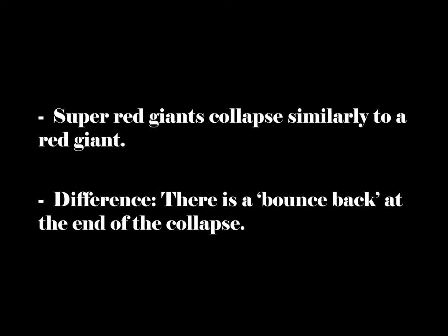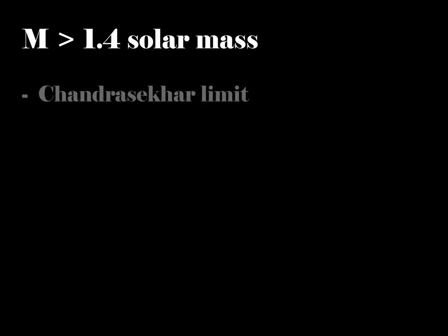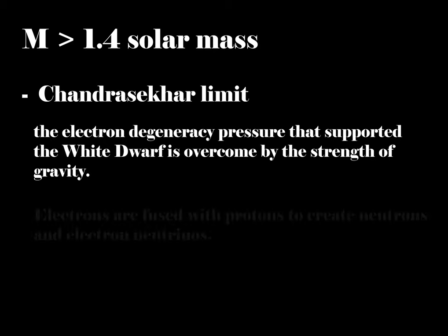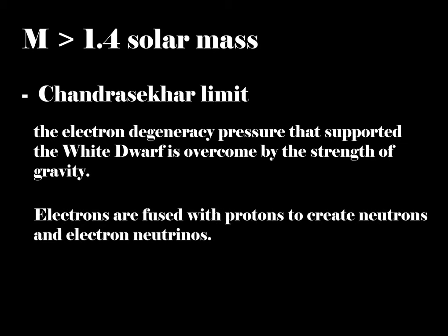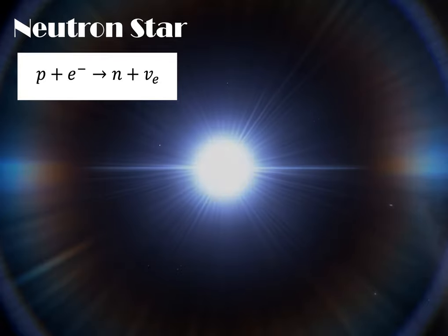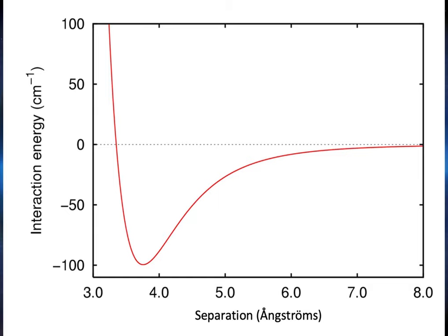Super red giants also collapse similarly to a red giant, the difference being that there is a bounce back at the end of the collapse, where some of the star is ejected in an explosion called a supernova. When the cores of these stars have a mass larger than around 1.4 times our solar mass, the Chandrasekhar limit is exceeded. This means the electron degeneracy pressure that supported the white dwarf is overcome by the strength of gravity. Electrons are fused with protons to create neutrons and electron neutrinos, creating a neutron star. The resulting neutrons are held in equilibrium due to neutron degeneracy pressure, which arises from the repulsive force of the strong interaction between neutrons at very small distances.